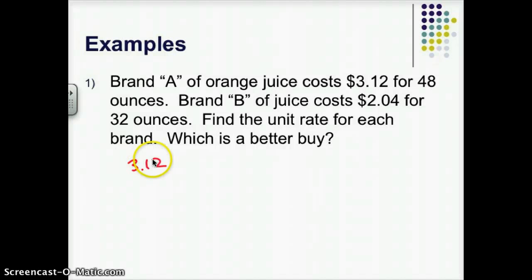So usually in the unit rate, you're finding per ounce or maybe per dollar. In this case, I think it would probably make more sense to do per ounce. So we're going to do $3.12 divided by 48. That could give us our unit rate for Brand A. I'm going to get 0.065. And I'll think about what that means. 0.065, that's going to be 0.065 dollars per ounce because I divided dollars by ounces. For Brand B, I'm going to do $2.04 divided by 32.